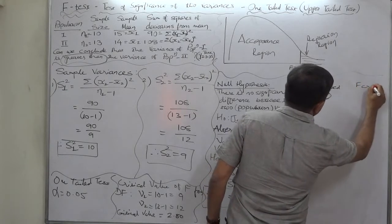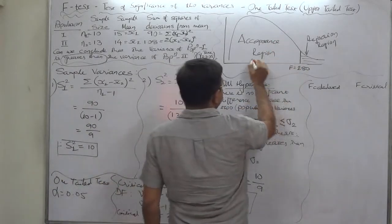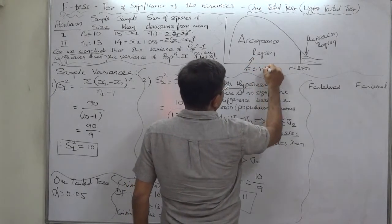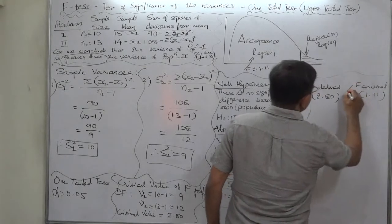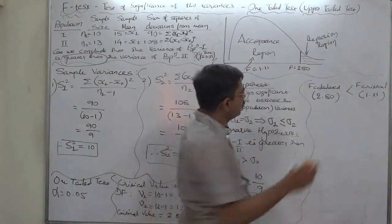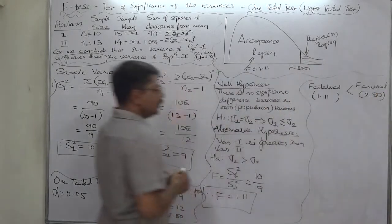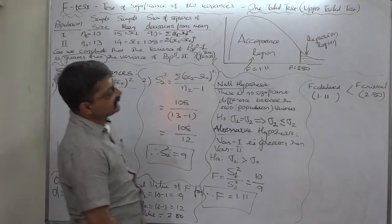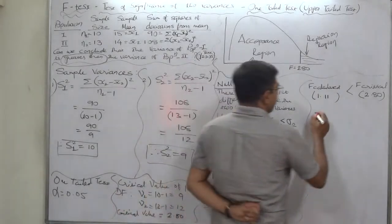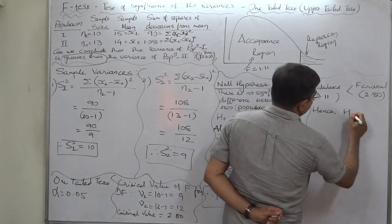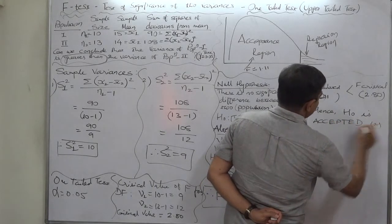F_calculated = 1.11 is less than F_critical = 2.80. So it falls in the acceptance region. Since the calculated F-ratio is less than the critical value, the null hypothesis is accepted and cannot be rejected.